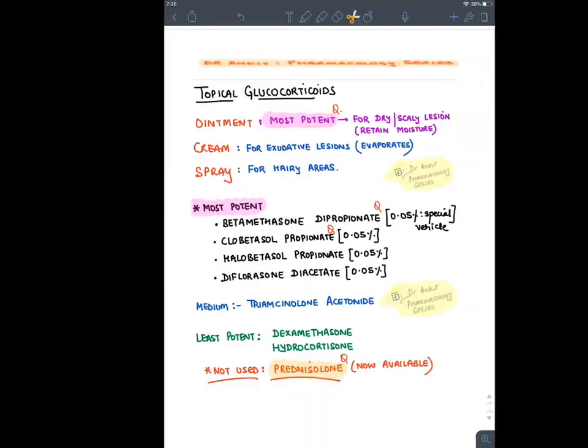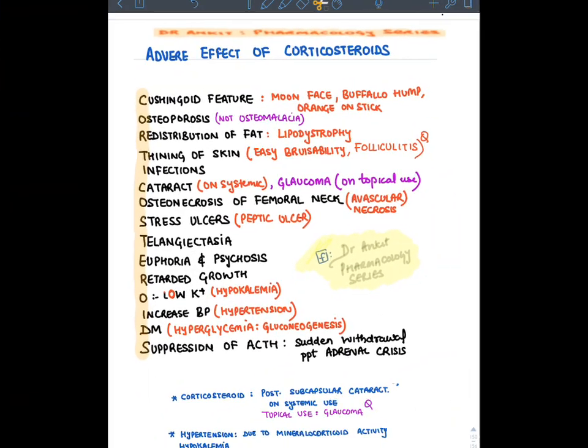The adverse effects of glucocorticoids are remembered with the mnemonic 'corticosteroid cushingoid features': moon face, buffalo hump, and orange-on-stick appearance (central obesity) due to redistribution of fat on the face and interscapular area. Corticosteroids are catabolic hormones, causing breakdown of proteins in all organs, leading to osteoporosis, lipodystrophy, thinning of skin due to collagen breakdown, and easier bruisability and folliculitis infections.